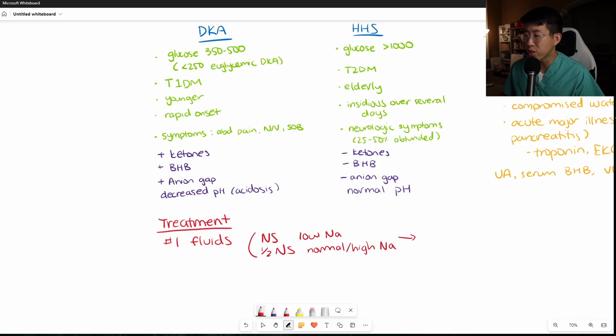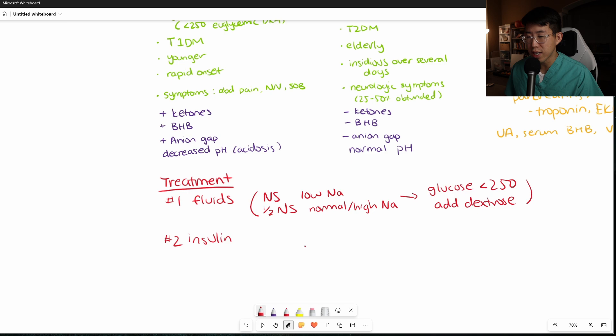This is continued until their glucose is less than 250, at which point you add a dextrose solution to the fluids. The reason is because our next treatment is actually going to be insulin. So insulin is obviously going to drive our blood sugar down, but sometimes we have to continue the insulin drip for longer, even if the patient's glucose has normalized. So we start to add dextrose to the patient's fluids. Once their glucose drops below 250, that way we can continue to use the insulin drip without risking hypoglycemia from the patient.